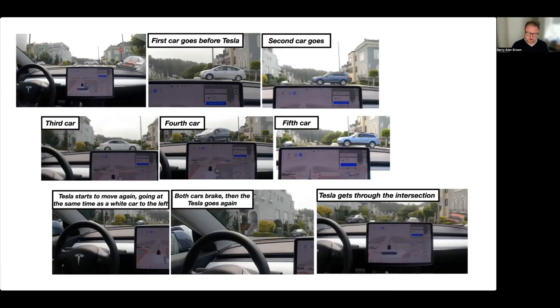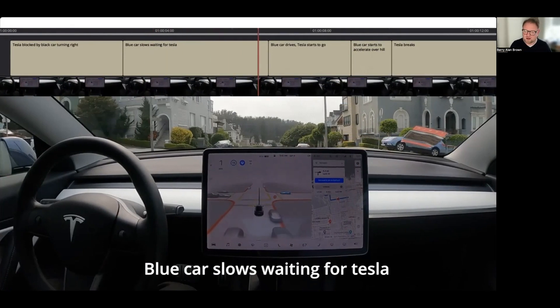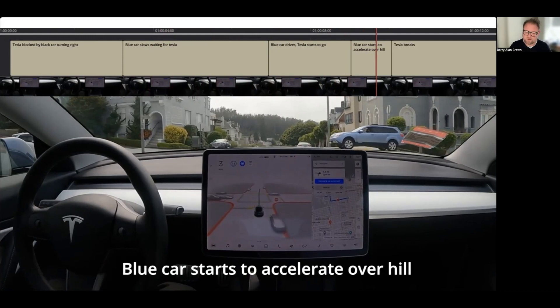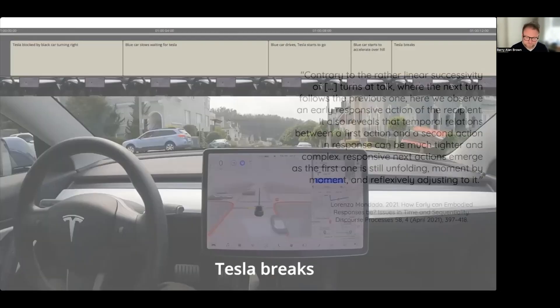Again you can see while the Tesla does manage to safely get through the intersection, it actually lets five cars go in front of it even though it actually had the right of way there. Again this fundamental problem—it can't see when cars are yielding for it—but in this case the yielding is slightly more complicated than just a go-yield pair, because in an intersection like this you actually find that the movement of the cars is a bit more interconnected. If you look, for example, the Tesla gets blocked by this black car, the blue car slows down slowly, but the Tesla doesn't react in time to actually get through the intersection and it then has to in the end brake.